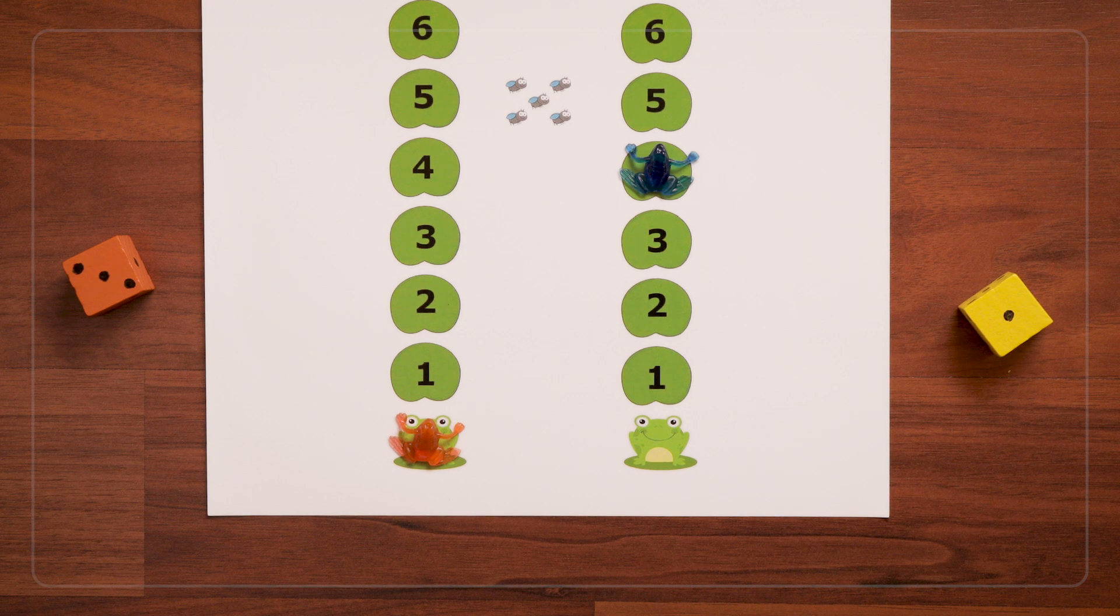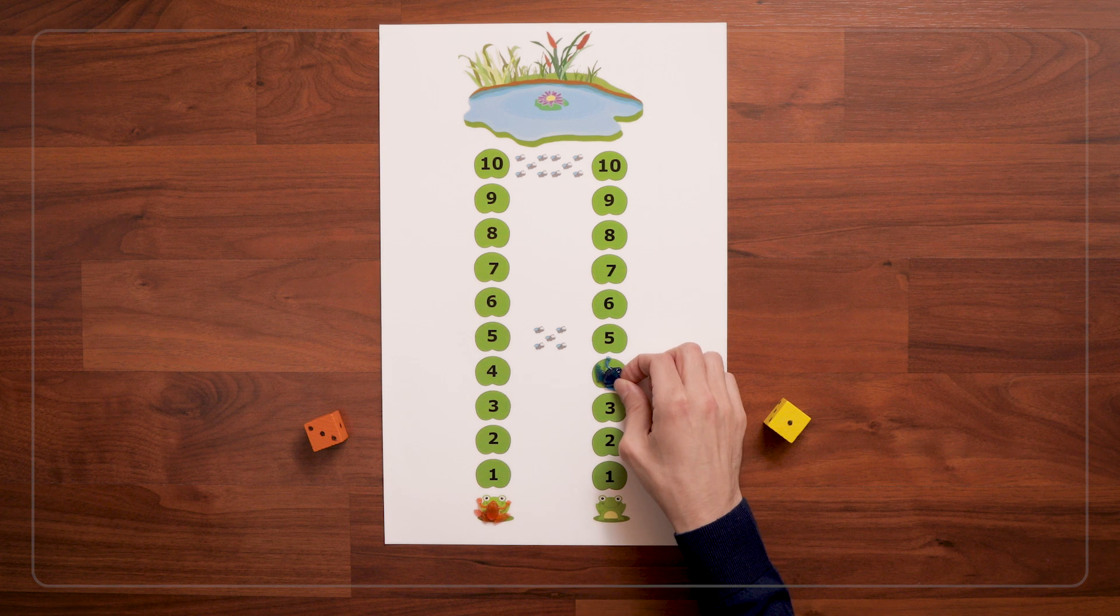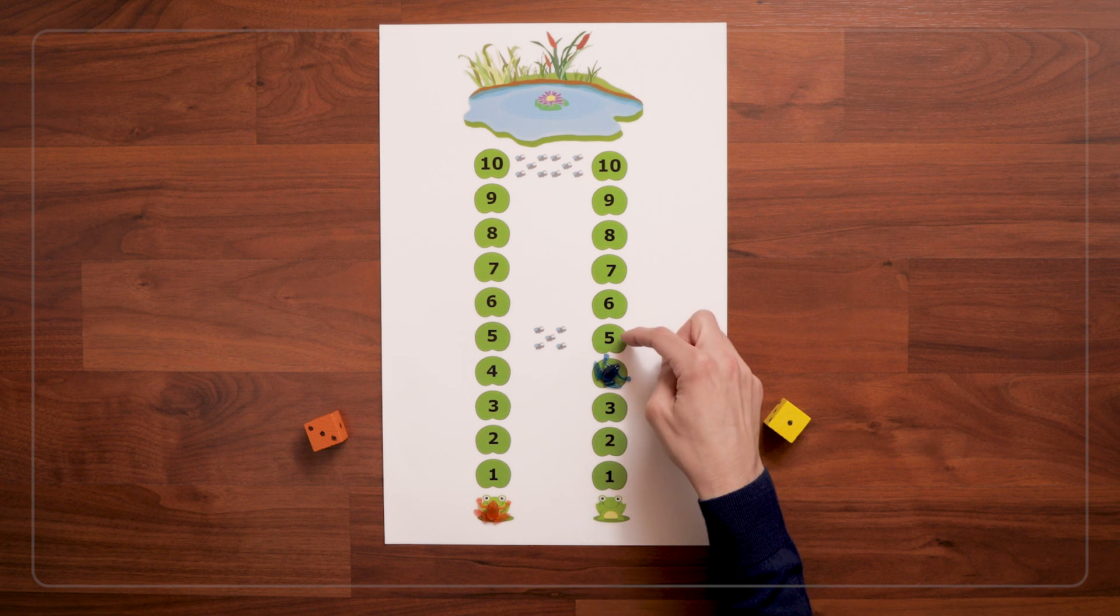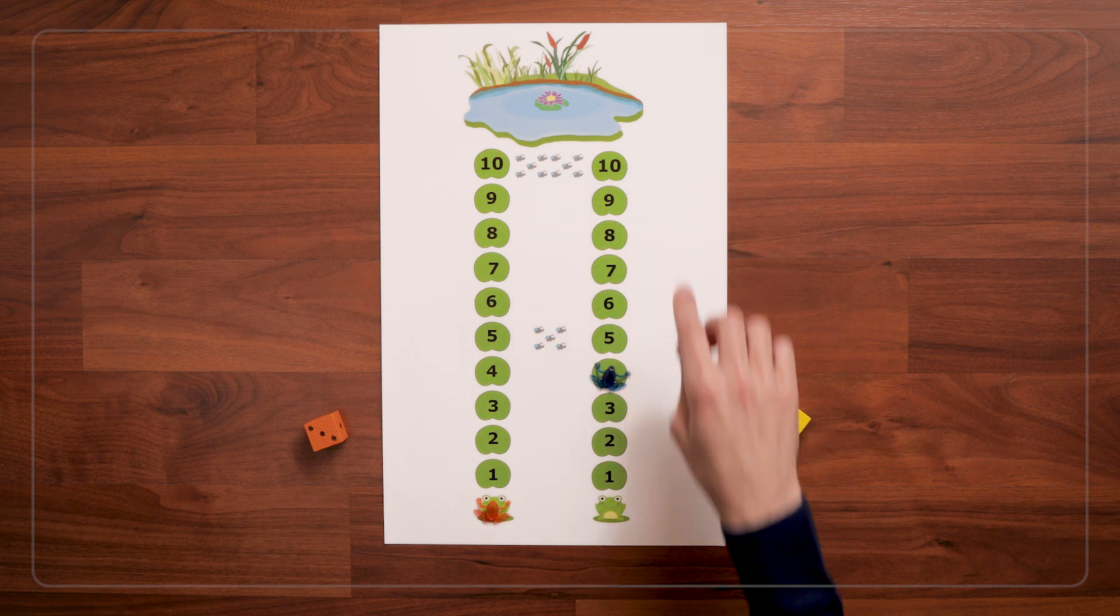Another thing that's tricky for a lot of children is sometimes they want to do their first jump on the number they're already on instead of jumping forward. So you really want to emphasize that with each roll, the frog moves forward.